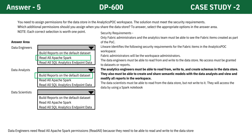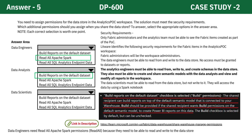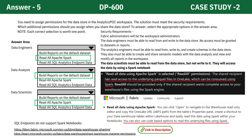For the data analysts, the correct permission is Build Reports on the Default Dataset, because with the build permission, the shared recipient can create reports using the default semantic model connected to your warehouse — fulfilling the analytics requirement mentioned in the case study. The data scientists would need Read All Apache Spark permission because this gives read access to the underlying Parquet files in One Lake, which can be consumed using Spark. The case study mentions that the data scientists will access data using Spark notebooks. You might have thought SQL endpoints was the correct answer as they are read-only, but SQL endpoints do not support Spark notebooks.